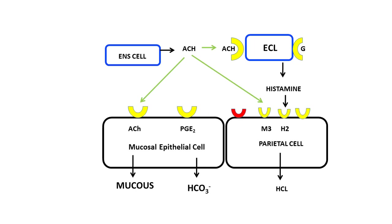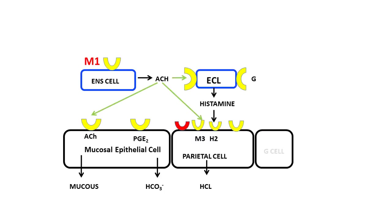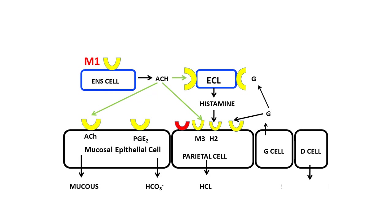The cells of the enteric nervous system are under the influence of the M1 receptor for acetylcholine. The G cells secrete gastrin, which binds to gastrin receptors on the parietal cell and on the enterochromaffin-like cell, stimulating these cells and ultimately causing a further increase in hydrochloric acid production. Finally, the D cells secrete somatostatin. Somatostatin binds to its receptors on the G cells and inhibits the G cells from secreting excess amounts of gastrin.